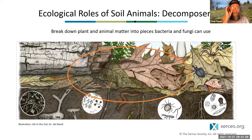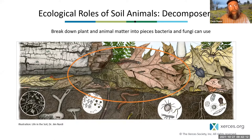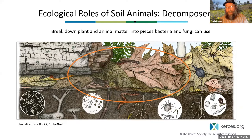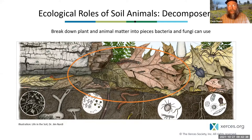Going back to the diagram that Stephanie introduced, this illustration looks at how different soil invertebrates work to break down plant and animal material into pieces that bacteria and fungi can use. Decomposers break organic matter into small pieces that bacteria and fungi can more easily use, and these smaller particles provide niches and pores for bacteria to occupy.